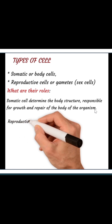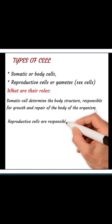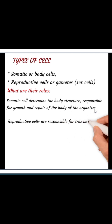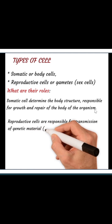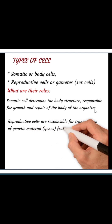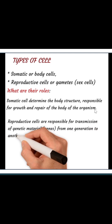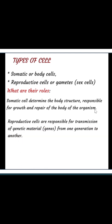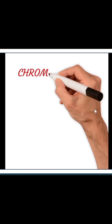Reproductive cells, on the other hand, are responsible for the transmission of genetic material — that is the DNA or the gene — from parents to their offspring and from one generation to another. The reproductive cells are the spermatozoa in the male and the ova in the female. Those are the cells that transfer genetic material from one generation to another.